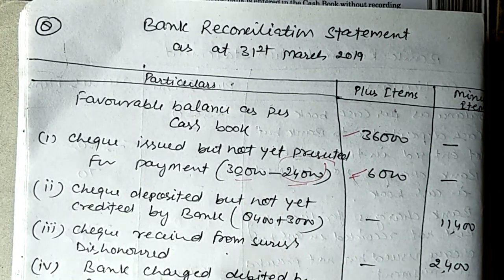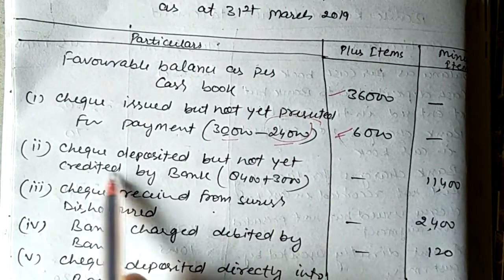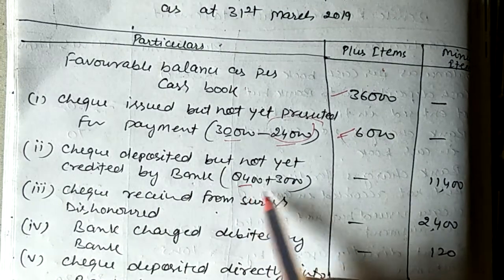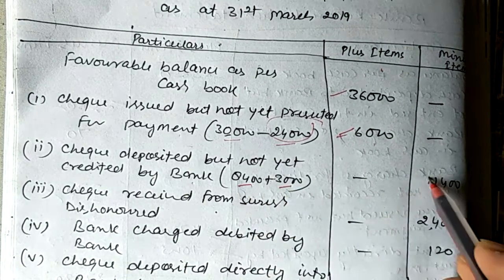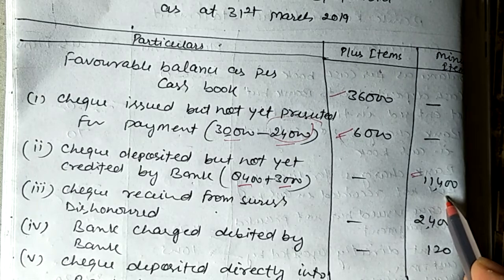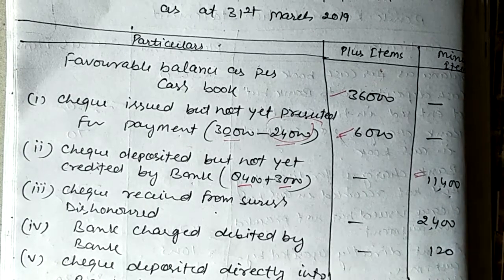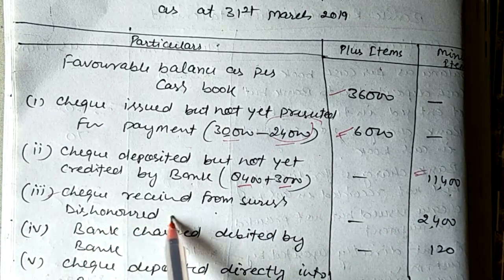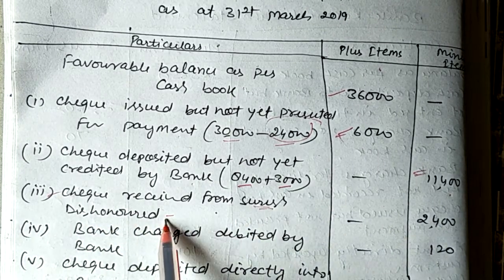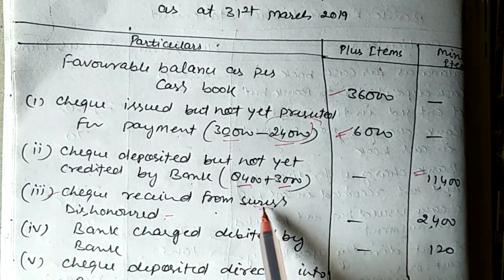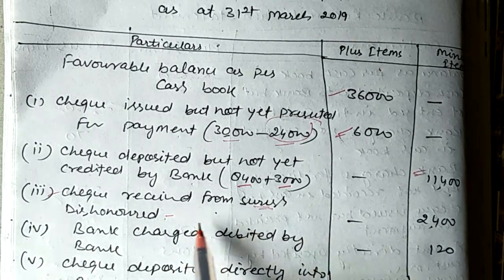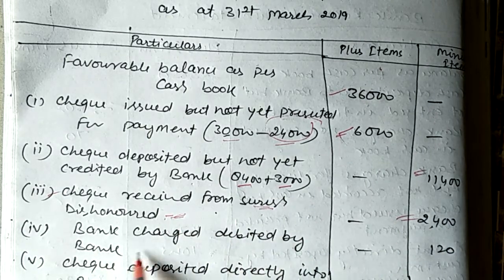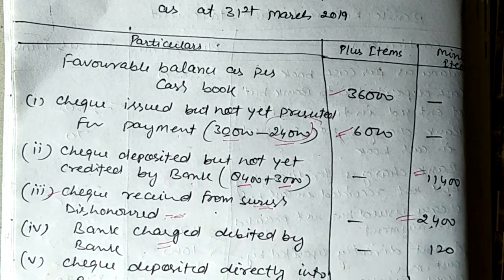Next, cheques deposited but not yet credited by the bank: we had two cheques, one for 8,400 and one for 3,000 rupees — total 11,400. This cheque total has not been credited by the bank so this amount will be minus. The cheque we received from Suresh has been dishonored — we had recorded it in the cash book but since it is now dishonored, we need to minus it. Bank charges debited by the bank — so we need to minus the cash book for those too.